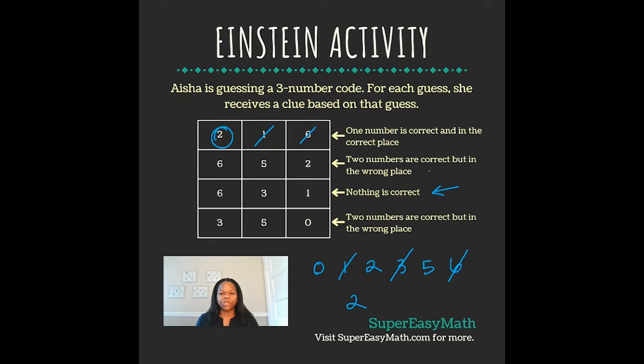The second clue says two numbers are correct but in the wrong place. Well, again, I know six is not a part of it, so we're dealing with the five and the two, which makes sense.